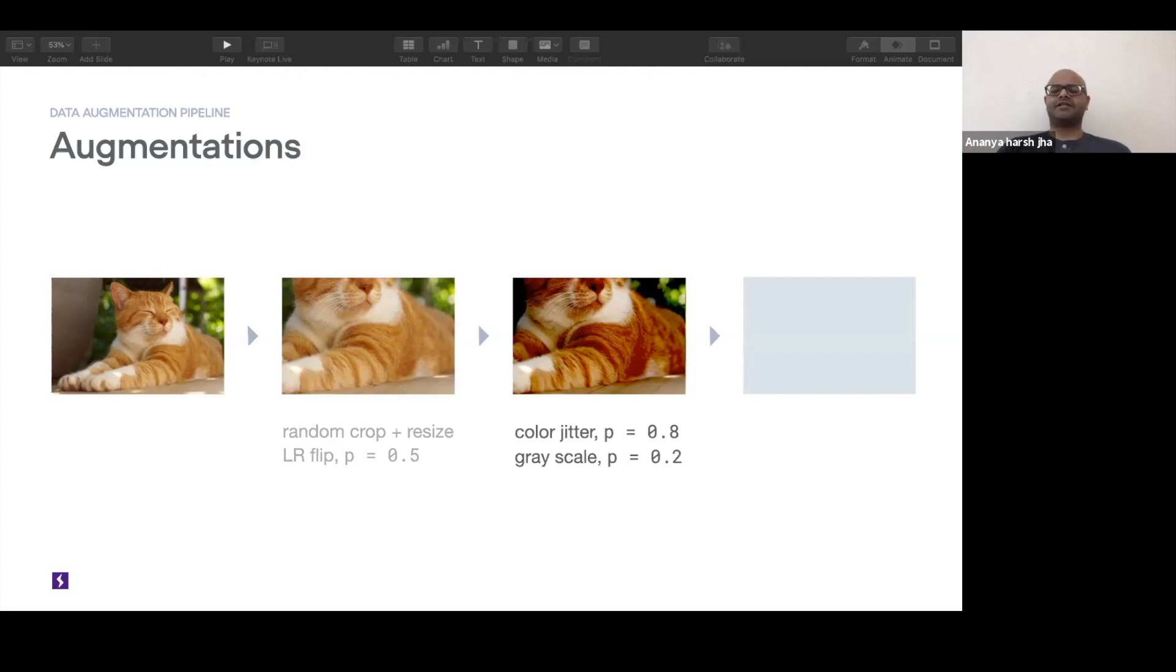After color jitter, we have a grayscale filter, which is applied with a probability of 0.2. So if the grayscale filter is applied, this whole color thing, the color simply vanishes and you have a grayscale image.